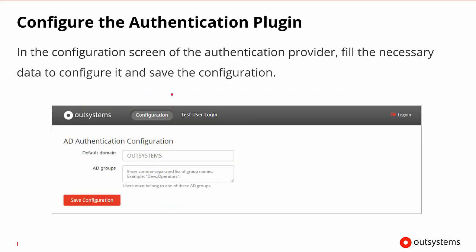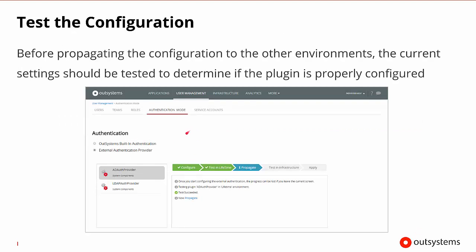Configuring the authentication plugin is relatively simple. For each of the different types, like the Active Directory authentication, there's some information that needs to be provided, and then we can click Save Configuration. Once we set the configuration, we would then want to test it by seeing if a user can log in with that particular configuration. So here we would have asked for an external authentication provider, selected the Active Directory choice. At this point, we would have configured it, tested it, and once the user could log in, the next step would be to propagate this to all the different environments.